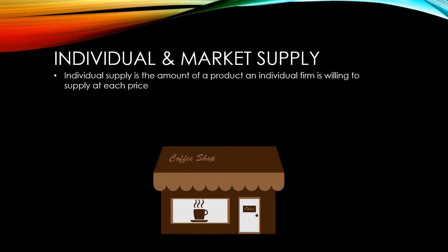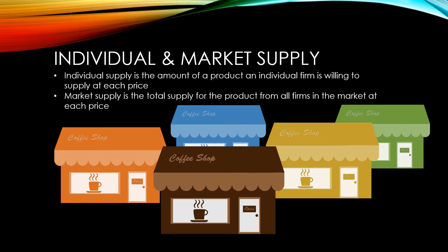Individual supply is the amount of a product an individual firm is willing to supply at each price in a given time period. Market supply is the total amount supplied by all firms in the market at each price in a given time period.